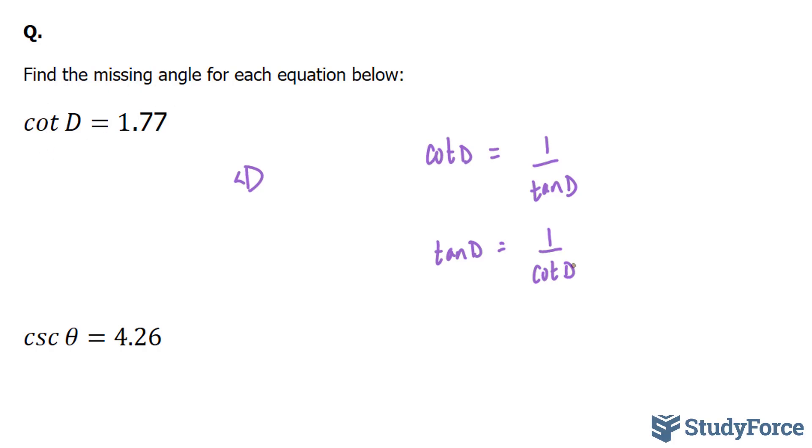So all you really have to do is replace cotangent D, this part, with 1.77, and then take the inverse tangent function. So if we do tangent inverse of one over 1.77, we will get angle D. And angle D, therefore, is equal to the inverse tangent of one over 1.77.